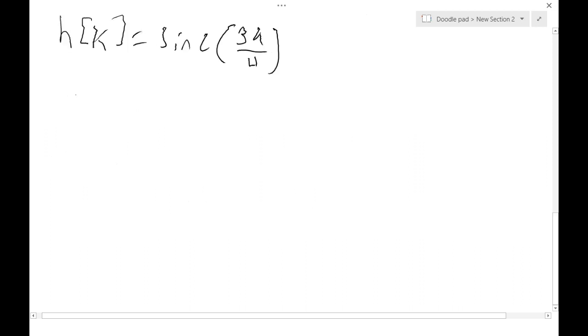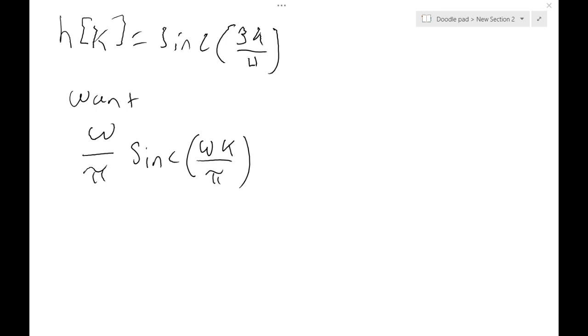But now let's look at h of k. I said that x of k was an easier one because h of k is a sinc function, which can become quite nasty. So when we look at the transfer table of what sinc is, we get omega over pi of sinc of omega times k divided by pi. We don't have that, but we can finagle this equation a little bit.